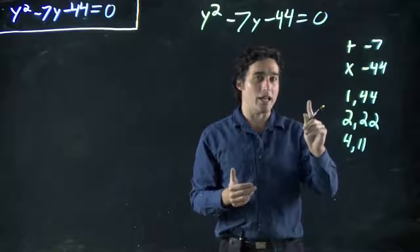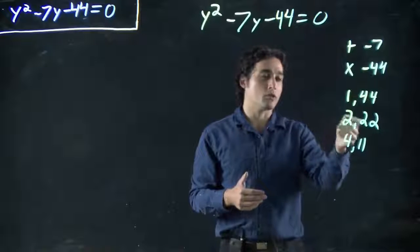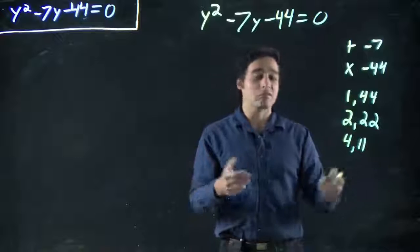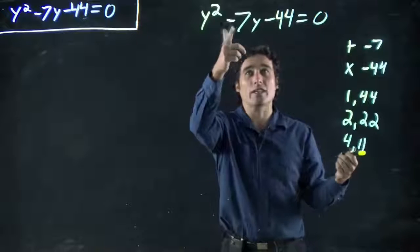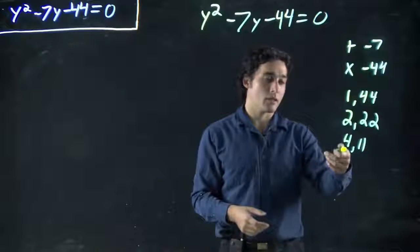So I need one to be negative, one positive. Well, 2 and 22—the smallest I'm getting is 20, so that's not going to work either. 4 and 11, though.